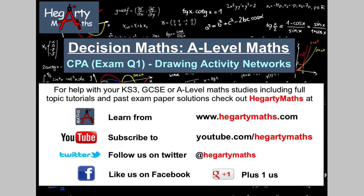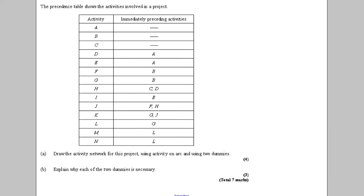Hi there and welcome to another video from HegartyMaths. I'm Mr. Hegarty and I'm doing an exam question on critical path analysis. It's on the first type of question that tends to come up: drawing an activity network. Here's the typical question — they give you a precedence table and ask you to draw an activity network and explain the use of the dummies that you have used.